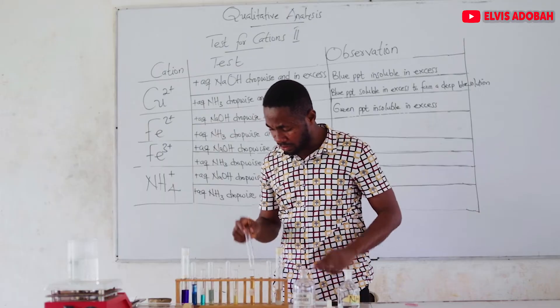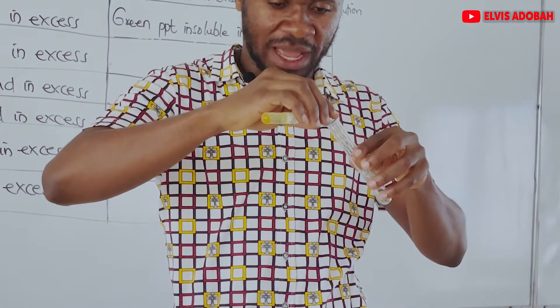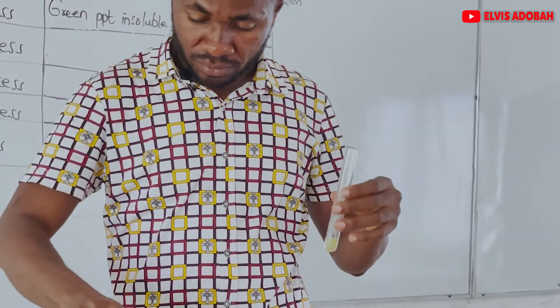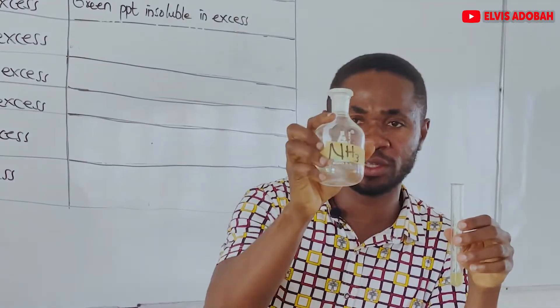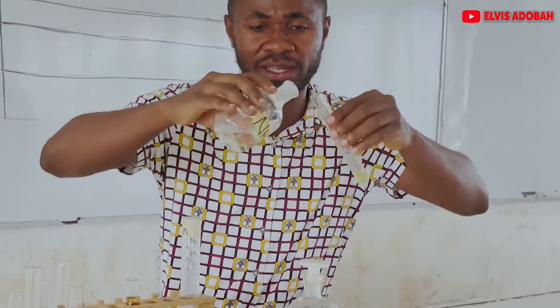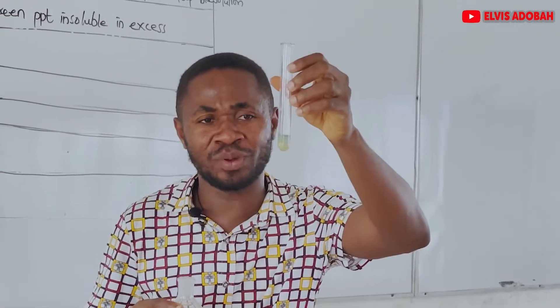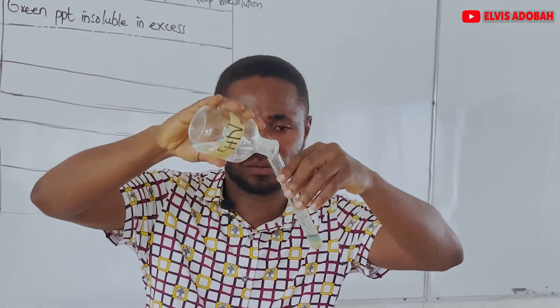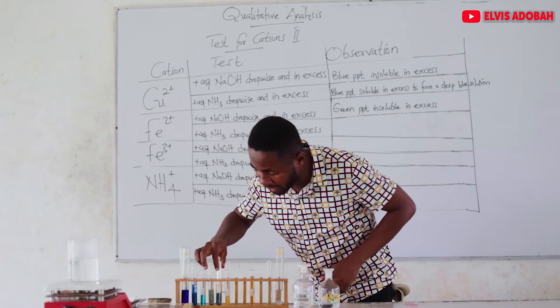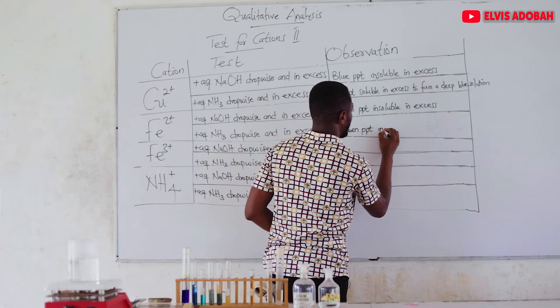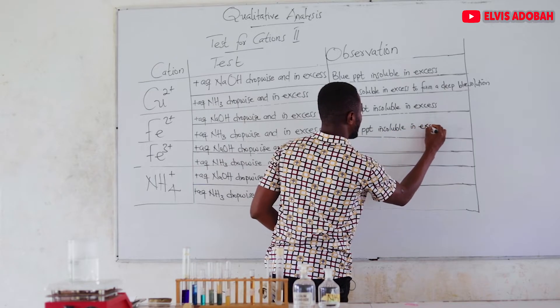Let's take another portion of the same Fe2+, and this time we are going to add aqueous ammonia dropwise, then in excess. We are still forming the same green precipitate. Adding in excess — the precipitate persists. So we have green precipitate, insoluble in excess aqueous ammonia.